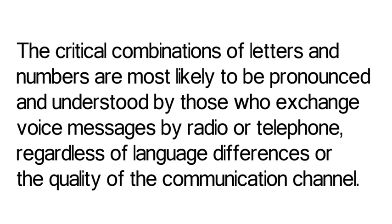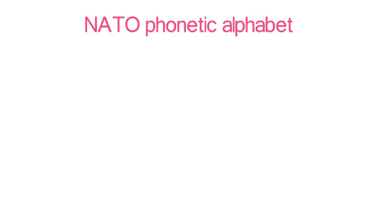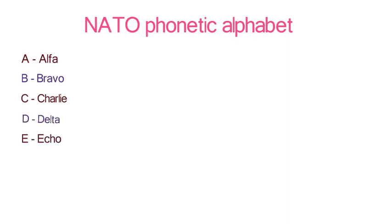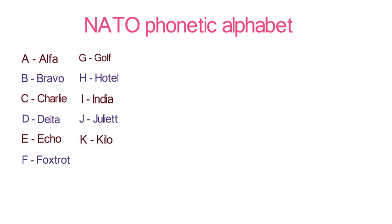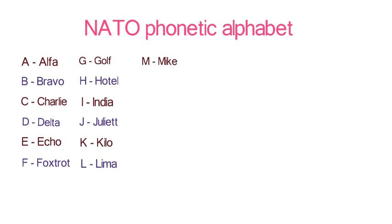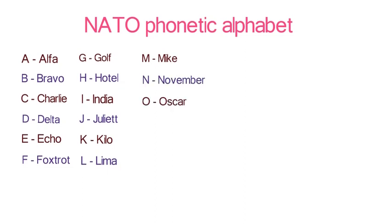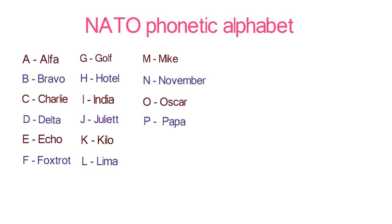Let's learn them to become a more lucid you. A for Alpha, B for Bravo, C for Charlie, D for Delta, E for Echo, F for Foxtrot, G for Golf, H for Hotel, I for India, J for Juliet, K for Kilo.